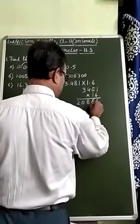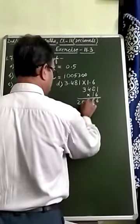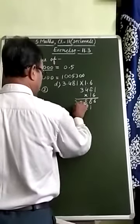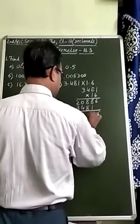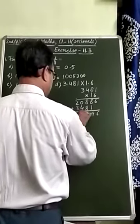Now, multiply by 1: 1 into 1, 1. 8 into 1, 8. 4 into 1, 4, and 3 into 1, 3. Add them: 6, 9, 16, 5, and 5.